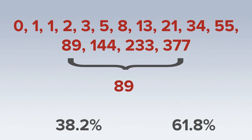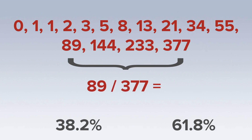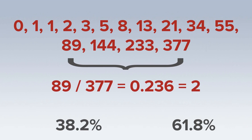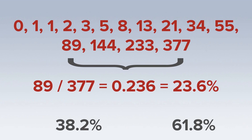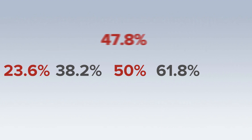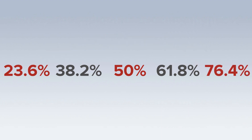Dividing a number in this sequence by the number three places after it will result in 0.236 or 23.6%. These are the primary numbers used in Fibonacci trading, with the addition of a midpoint at 50% and the inverses of each of these percentages.